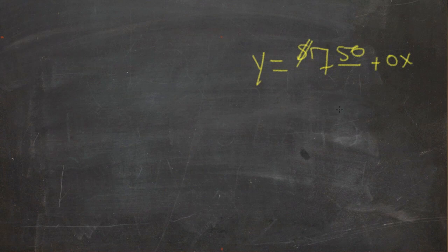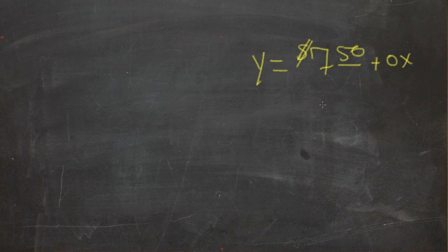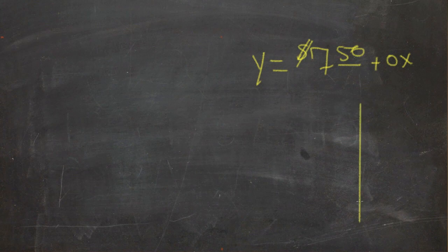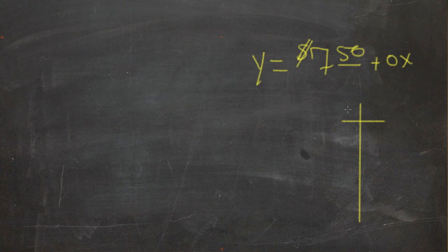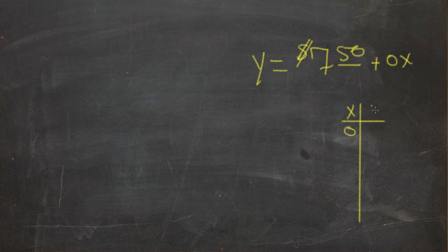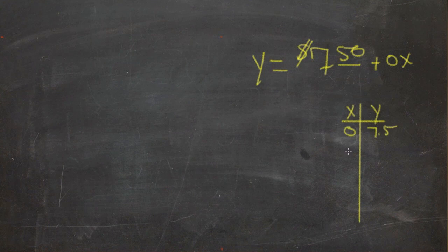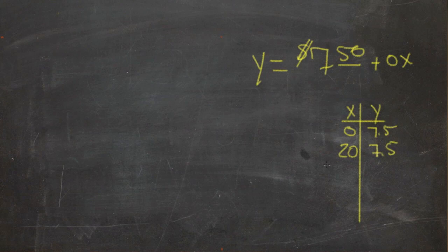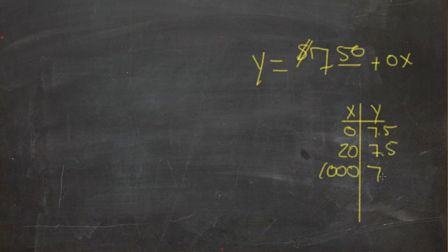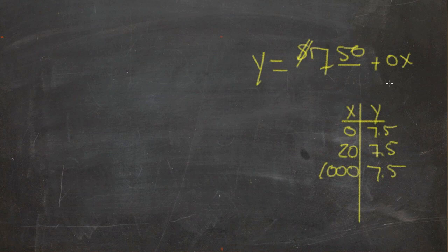And that way, no matter what it is, we can see that as x is 0, then y is 750. And if x is 20, y is 750. And if x is 1000, y is 750. It just doesn't change. So really the x doesn't matter at all in this instance.